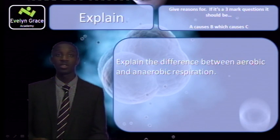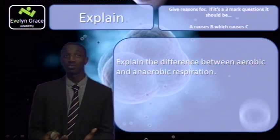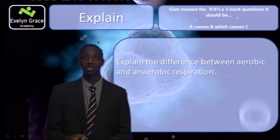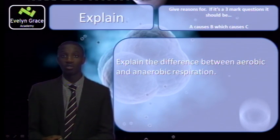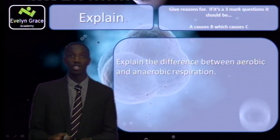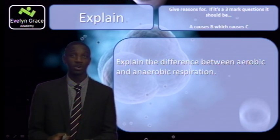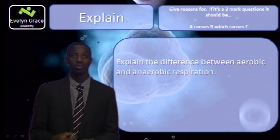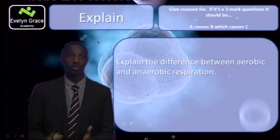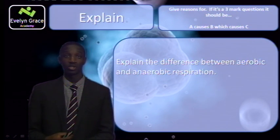Another point about explain: because it means give reasons for, it could be a three-mark question where A causes B, which causes C. For example: explain the difference between aerobic and anaerobic respiration. On a very simple level, aerobic respiration uses oxygen, whilst anaerobic respiration does not. Aerobic respiration: glucose plus oxygen gives carbon dioxide and water plus energy. Anaerobic respiration, on the other hand, does not use oxygen — it converts glucose into lactic acid and a small portion of energy.